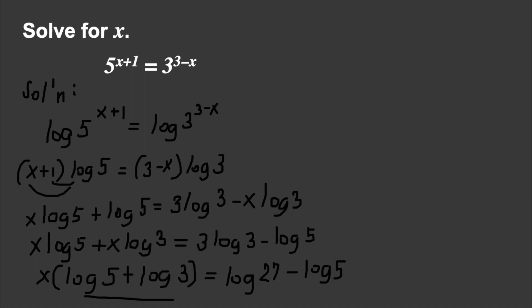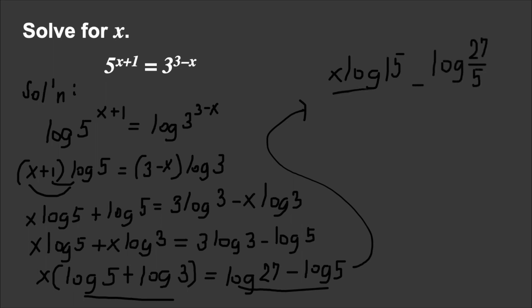Combining log 5 + log 3 using Property 3 (product rule) gives log 15, so the left side is x·log 15. On the right side, log 27 - log 5 uses Property 4 (quotient rule), giving log(27/5). Dividing both sides by log 15: x = log(27/5) / log 15, which by the change-of-base property equals log base 15 of (27/5). That's how you solve exponential equations using logarithms.